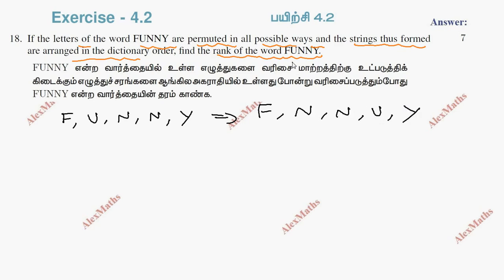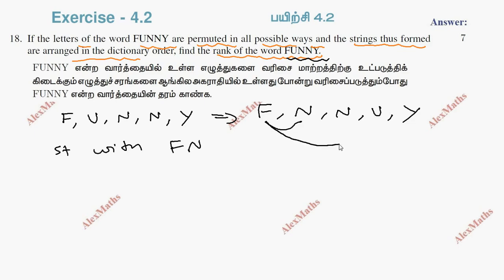To find the rank of the word FUNNY, we count all words that come before it. Words starting with F will be considered, then words starting with FN, then FU. With FU fixed, there is only one arrangement to consider.